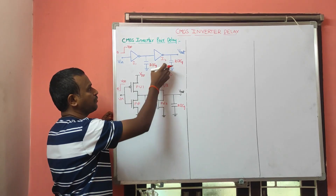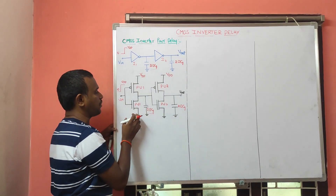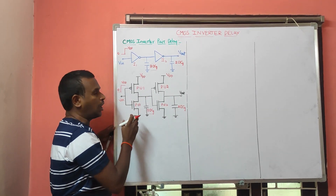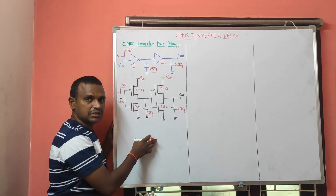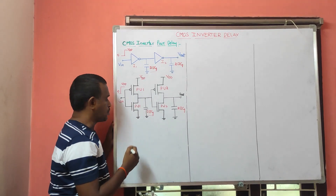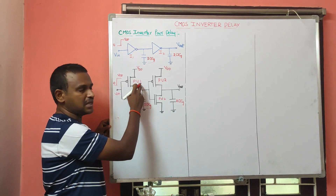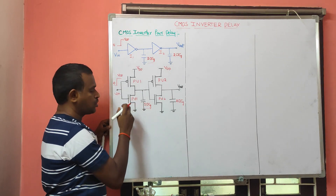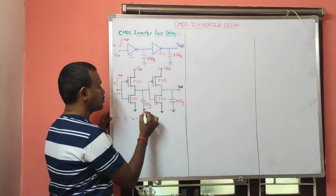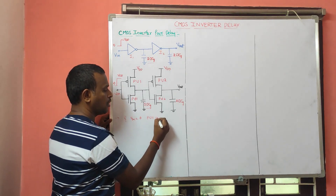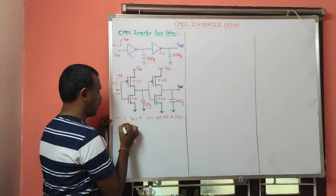These two inverters are connected and represented with symbols — inverter 1 and inverter 2 — to show what delay is provided when they are cascaded. First, consider VIN equal to 0. The PMOS is the pull-up transistor and the NMOS is the pull-down transistor. If VIN equals 0, input is 0, so pull-up 1 will be ON and pull-down 1 will be OFF.